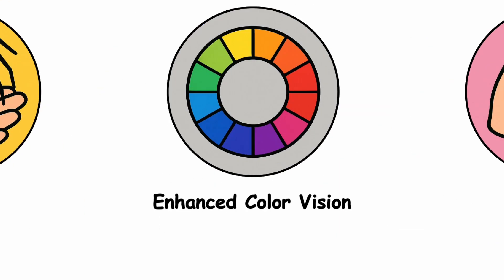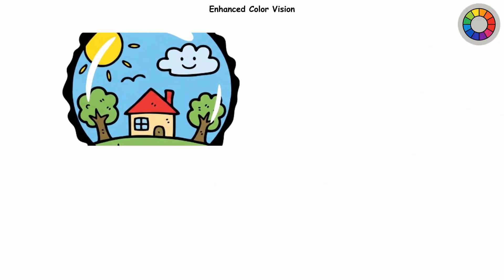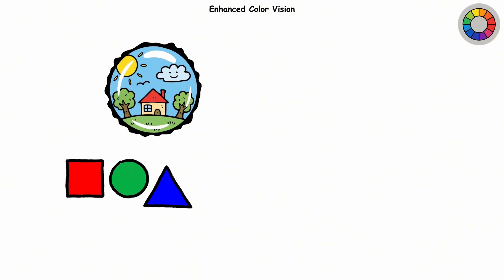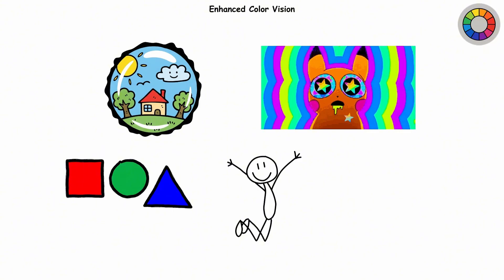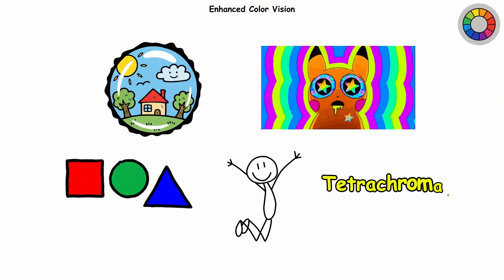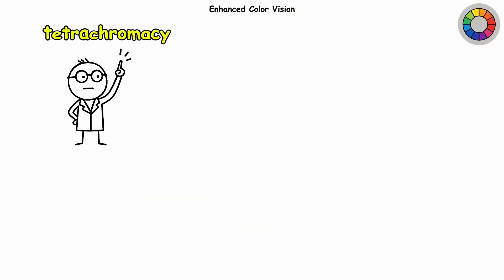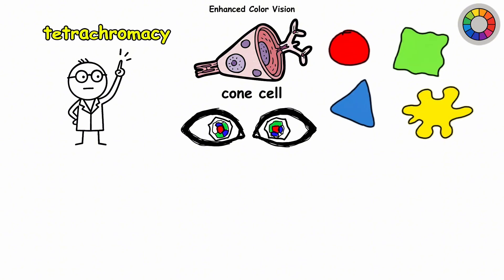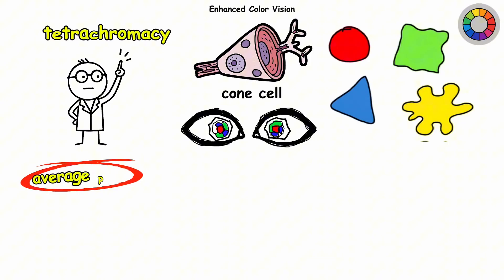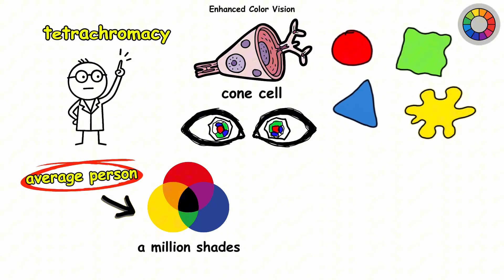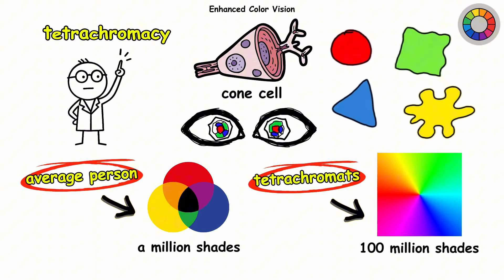Enhanced color vision. Most of us see the world through a standard three-color lens. Red, green, and blue. But some people, they're rocking quadruple vision. Not in the 'I ate some wild mushrooms' way. In the tetrachromacy way. People with tetrachromacy have an extra type of cone cell in their eyes, giving them four color receptors instead of three. While the average person can distinguish about a million shades, tetrachromats can see up to a hundred million.